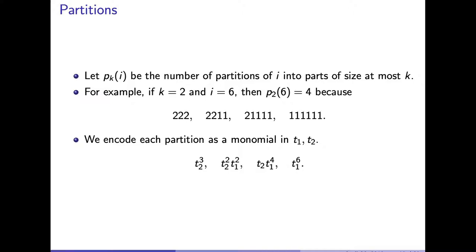Part two: let's talk about partitions. Let P_{K,i} be the number of partitions of the number i into parts of size at most K. For instance, if K = 2 and i = 6, then P₂(6) = 4 because using only the numbers 2 and 1 requiring them to add up to 6, we can take 2,2,2 or 2,2,1,1 or 2,1,1,1,1 or 1,1,1,1,1,1. Those are the four partitions of 6 using the numbers 2 and 1.